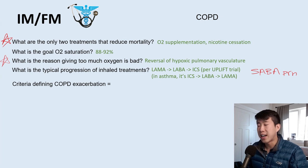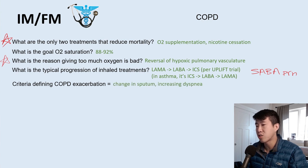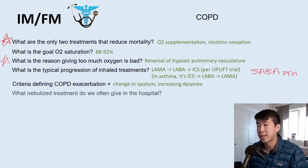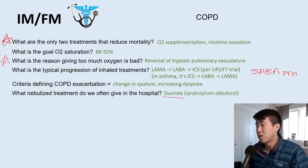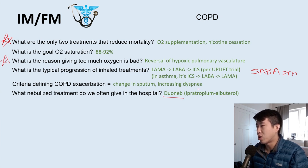The criteria that define a COPD exacerbation: two main criteria — change in sputum (either amount or quality) and increasing dyspnea or shortness of breath. A nebulized treatment often given in the hospital for acute exacerbations is called a duoneb — which is ipratropium and albuterol combined: a short-acting muscarinic antagonist plus a short-acting beta agonist.